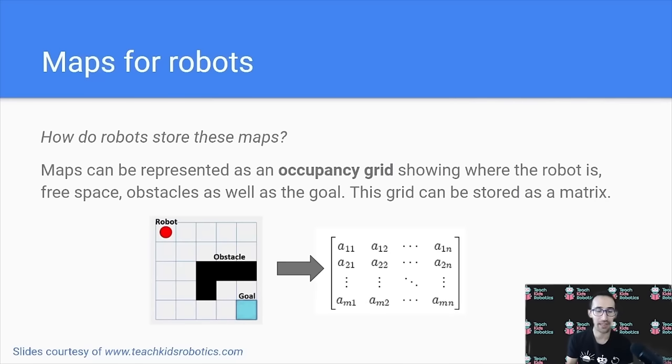A map showing kind of free space and where obstacles are is known as an occupancy grid, and it reflects not only where the robot is, but also where the robot can move. And this grid is often stored in a matrix, or basically a large set of rows and columns representing space, equivalent to the grid image on the left.